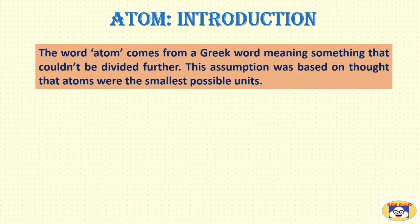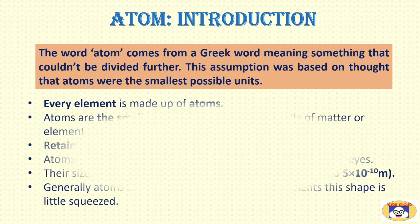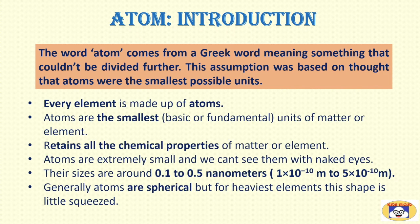The word atom comes from a Greek word, meaning something that couldn't be divided further. This assumption was based on thought that atoms were the smallest possible units. More precisely, we can describe an atom as follows. Every element is made up of atoms. Atoms are the smallest or basic or fundamental units of matter or element. They retest all the chemical properties of matter or element.